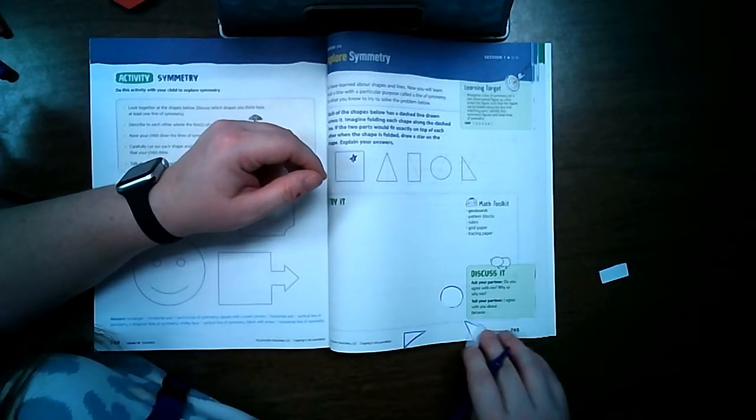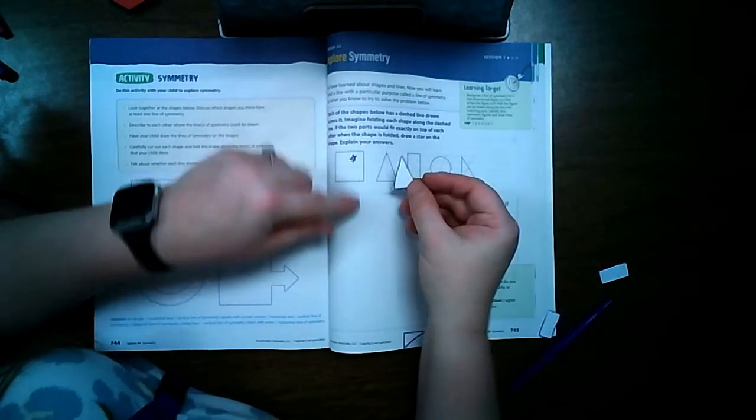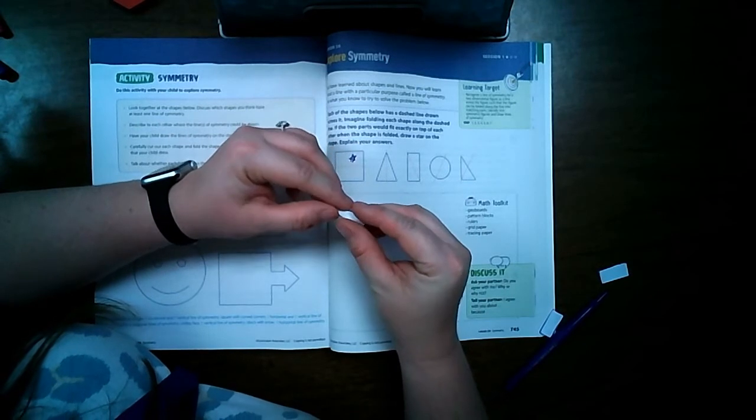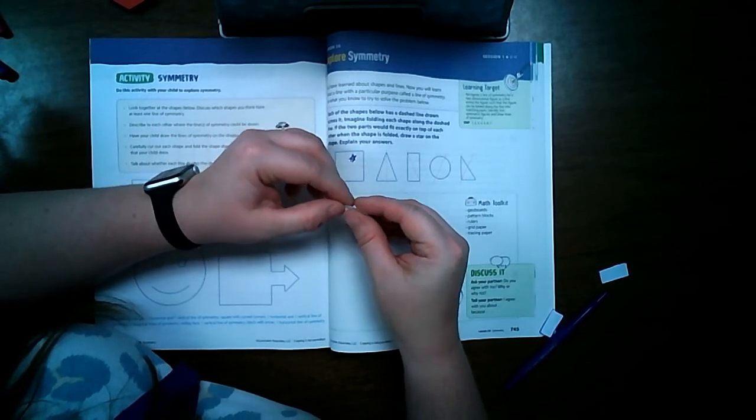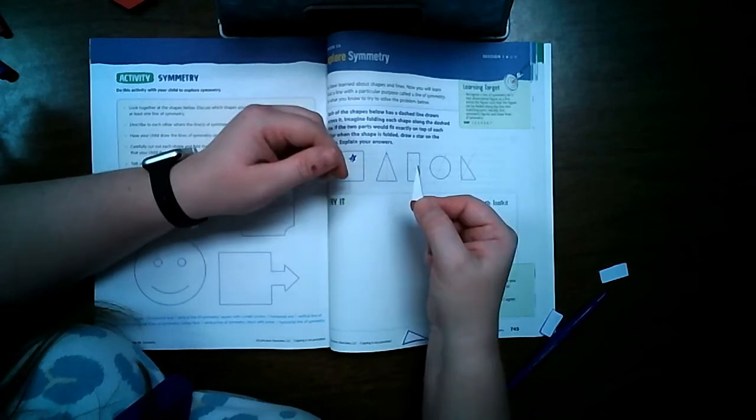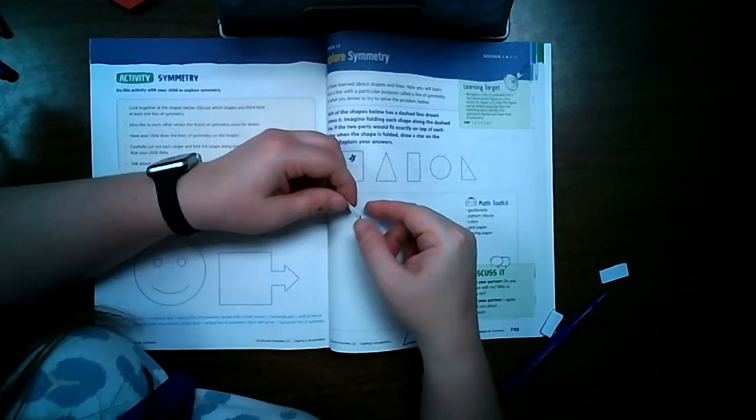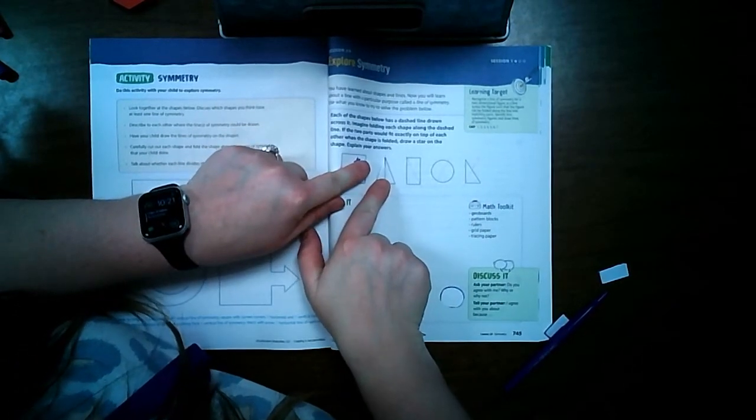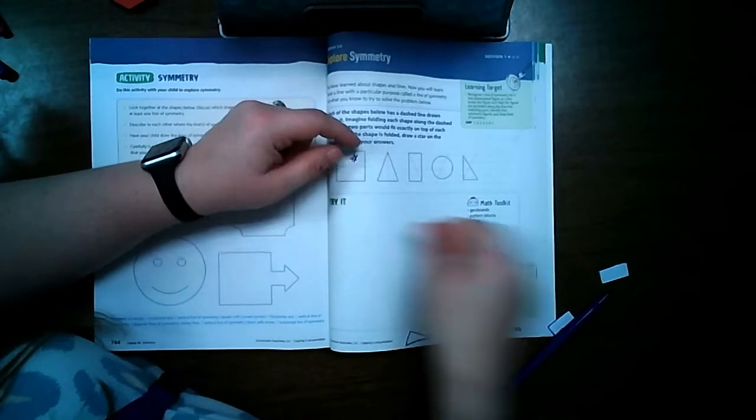Now I'm going to take my first triangle. If I fold this triangle in half, very carefully, on top of each other, do both sides line up right on top of each other? Yeah, they do. One half of it's right there. So that means it's symmetrical.